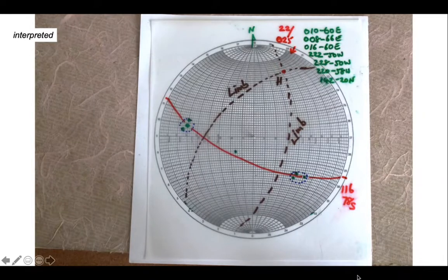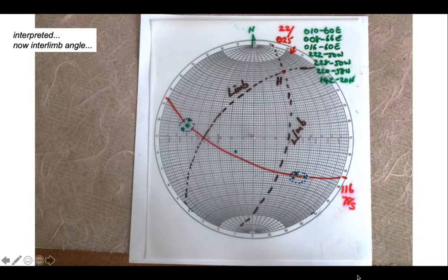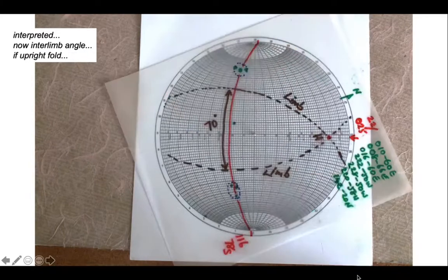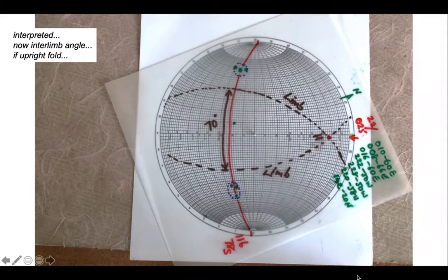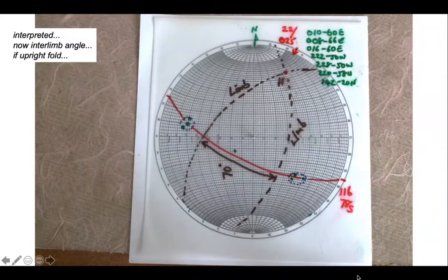We could go on now and measure the interlimb angle. If we know something about the orientation of the fold, if we assume that the fold is an upright fold—in other words the axial surface is pretty steep—then the interlimb angle is this angle in here, about 70 degrees between the two limbs measured in the profile plane. So there's our analysis.